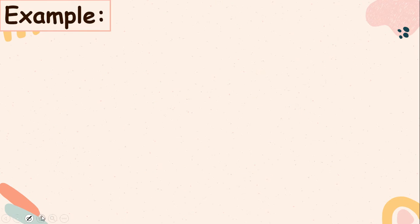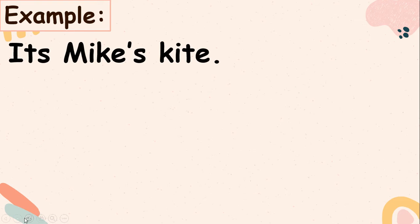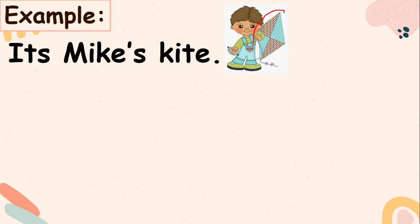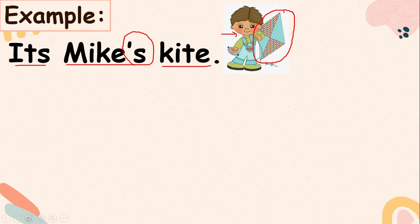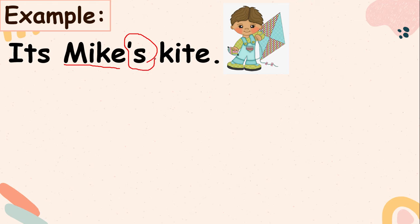We have more examples. For you to be clearer, we have here a picture. This picture is a kite and this is Mike. So we are going to say this kite is Mike's kite — we cannot say 'Mike kite.' We say 'It's Mike's kite.' So his name is Mike and we add apostrophe 's', so that we know the kite is owned by Mike.